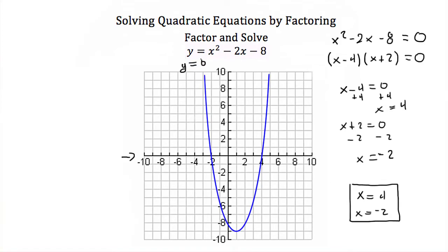Now if we look at the graph of y is equal to x squared minus 2x minus 8, here we have x intercepts at negative 2 and positive 4. Which is exactly what we got when we factored this and then used the zero product property to find values of x that make this equation equal to zero. Now again, x is equal to 4 doesn't make both binomials equal to zero. It just makes one, and then that makes all the other binomials multiplied by zero.